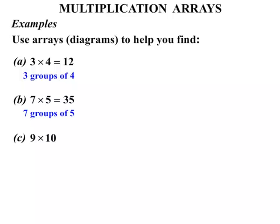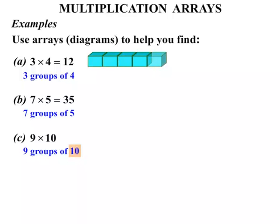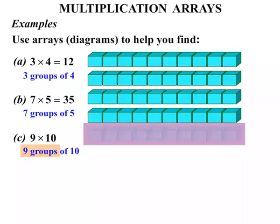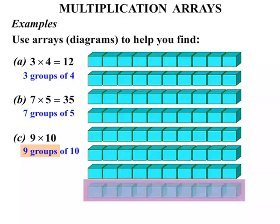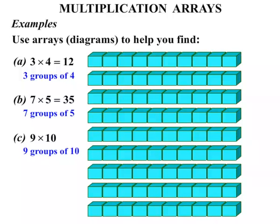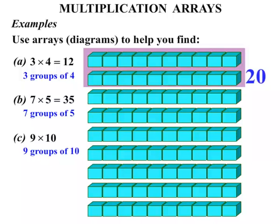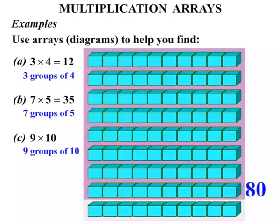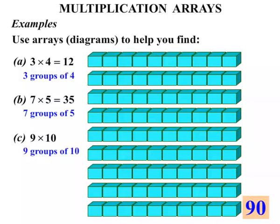Part C: nine times ten — another way of saying that is nine lots of ten, same as nine groups of ten. So let's think of ten little cubes: one, two, three, four, five, six, seven, eight, nine, ten. There's our one group; we want nine groups: one, two, three, four, five, six, seven, eight, nine. We've got nine groups of ten. Let's count them: ten, twenty, thirty, forty, fifty, sixty, seventy, eighty, ninety. So nine times ten, or nine lots of ten, equals ninety.